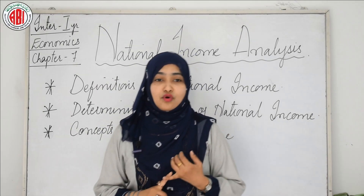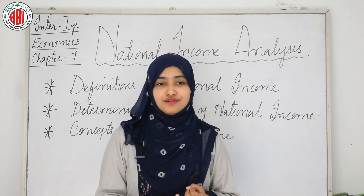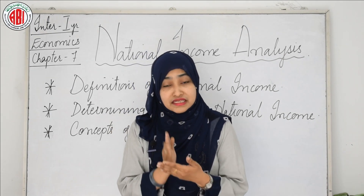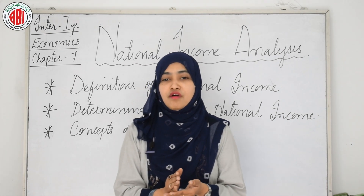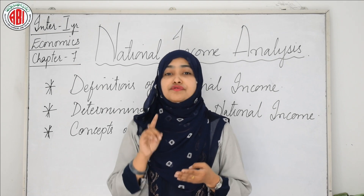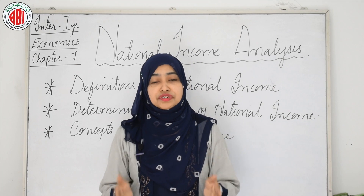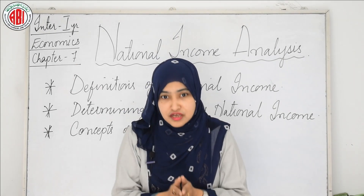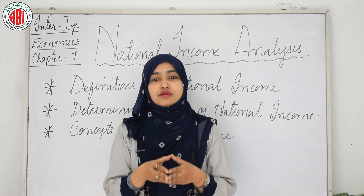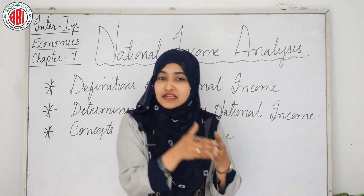The next concept is net national product at factor cost. It is also called national income, and it is the total income received by the four factors of production in the form of rent, wages, interest, and profit in an economy during a year. The NNP at market price is not available for distribution among the factors of production. If goods are sold in the market at lower prices than the actual cost of production, the value of subsidies has to be added to the net national income at market prices.